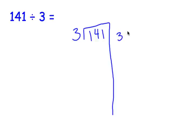If I put a 30 over here, I'm going to do 30 times 3. 30 times 3 is 90. I'm just going to subtract out those 30 groups of 3 from our original number. 1 minus 0 is 1, we have to borrow. 14 minus 9 is 5. Now we have 51.